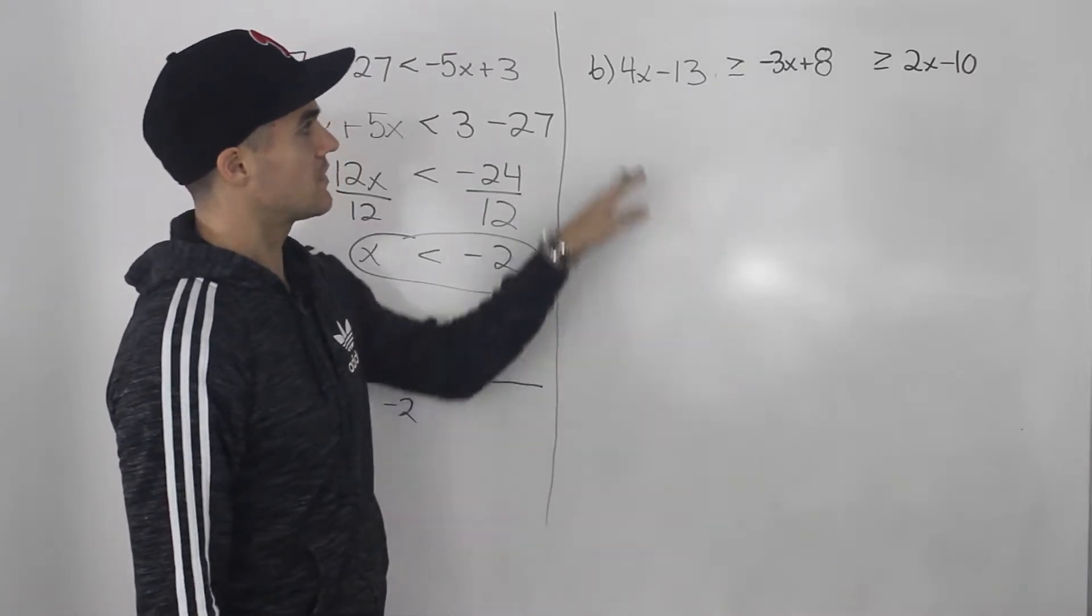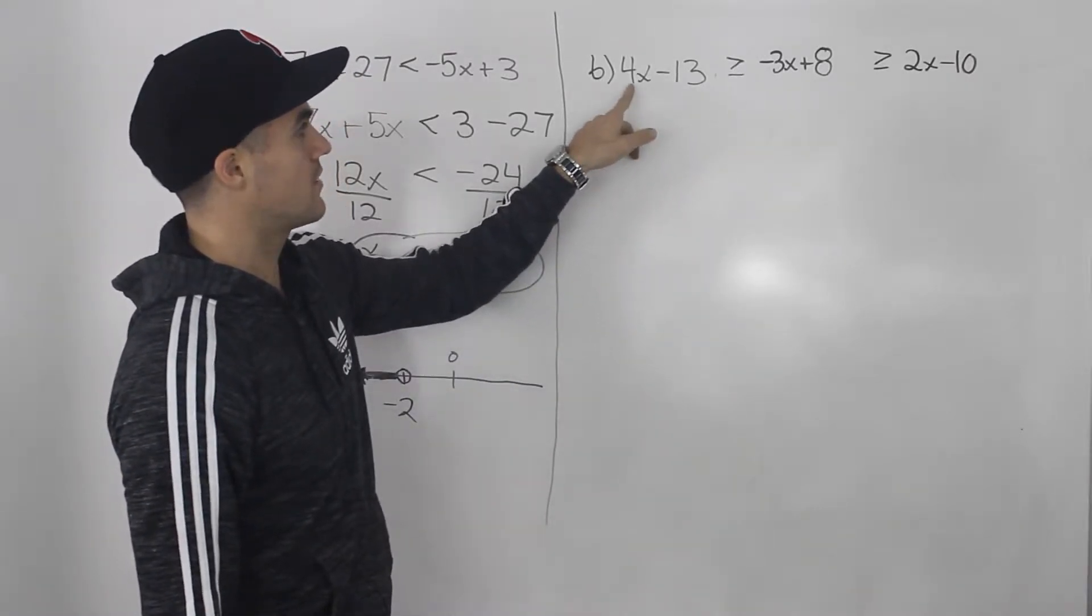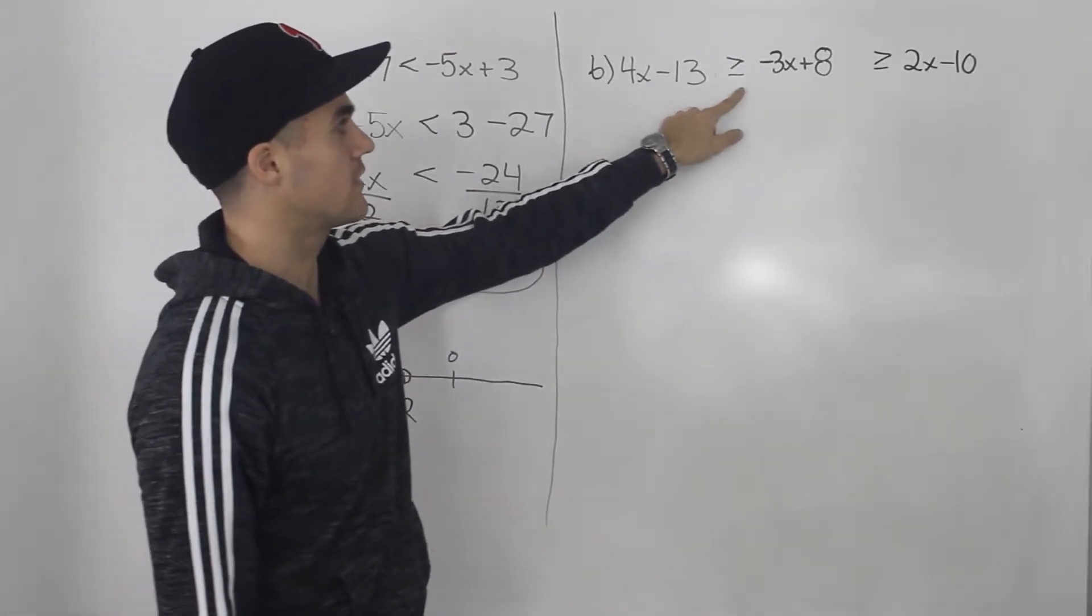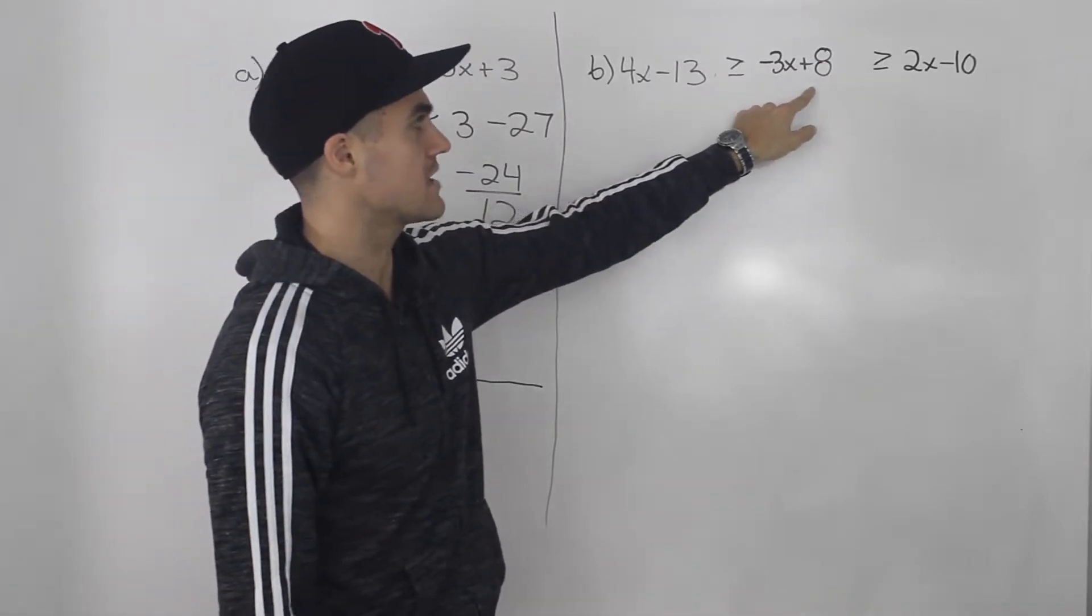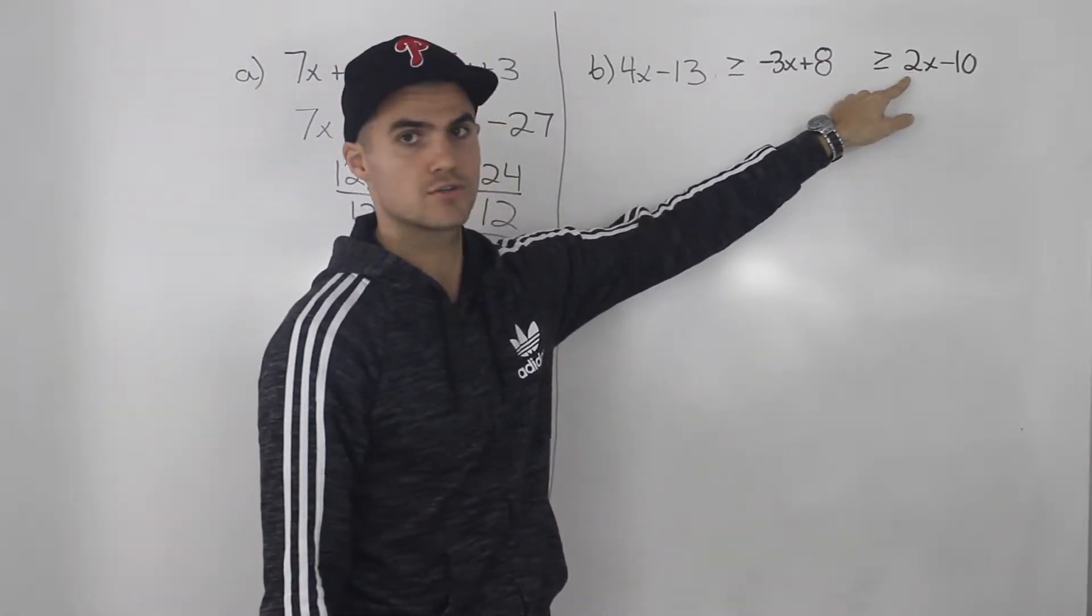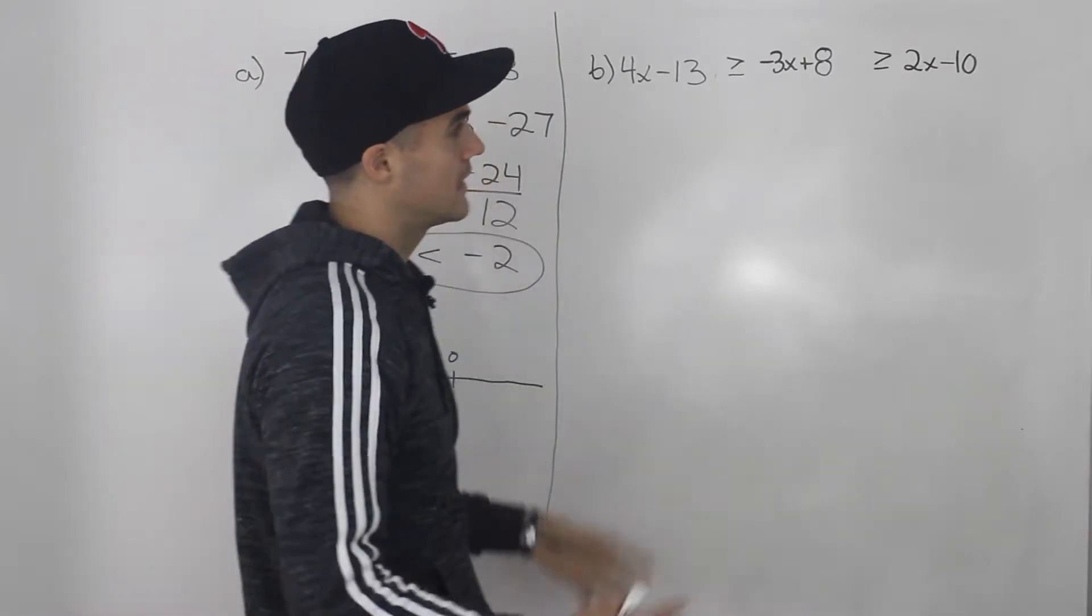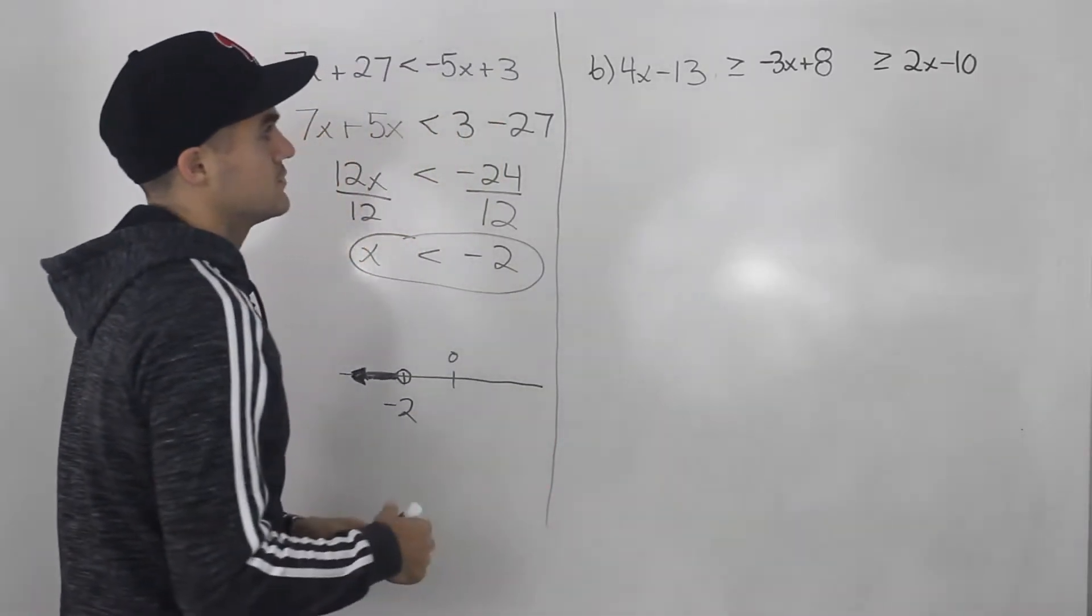And moving on to Part B, notice how we have a double inequality here. So 4x minus 13 is greater than or equal to negative 3x plus 8, which is greater than or equal to 2x minus 10. Now double inequalities, different ways to do them.